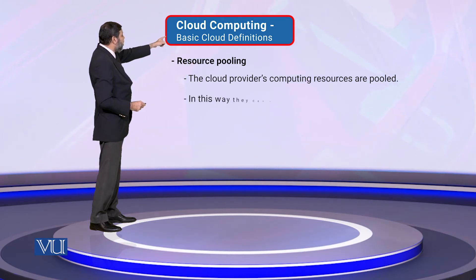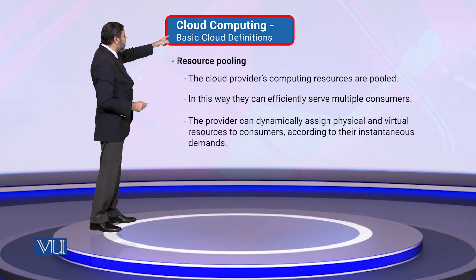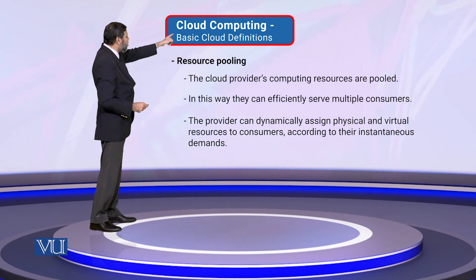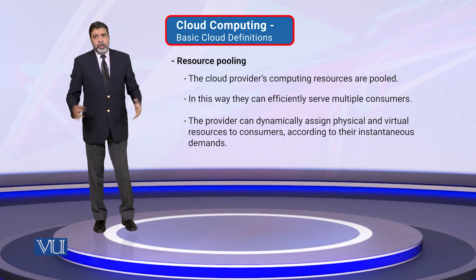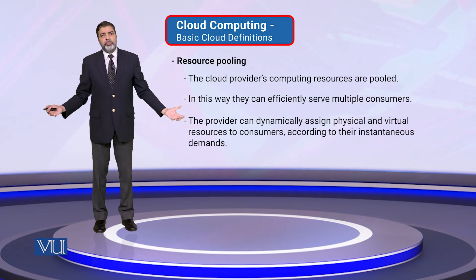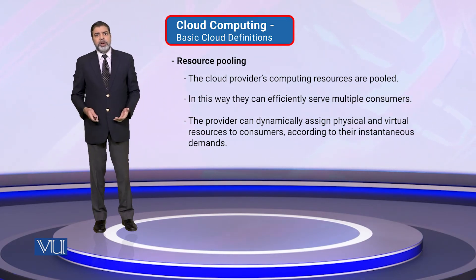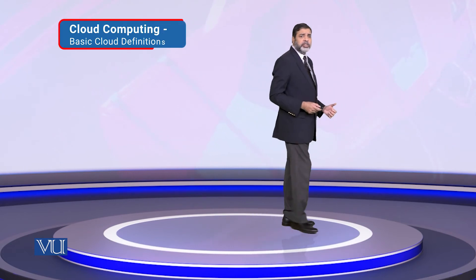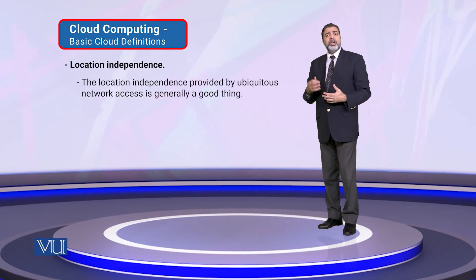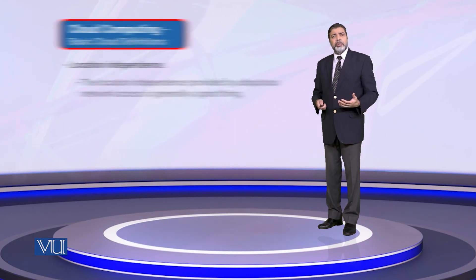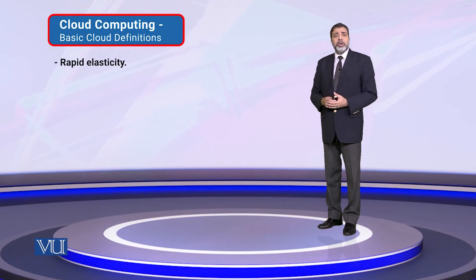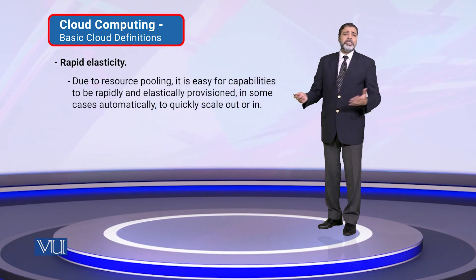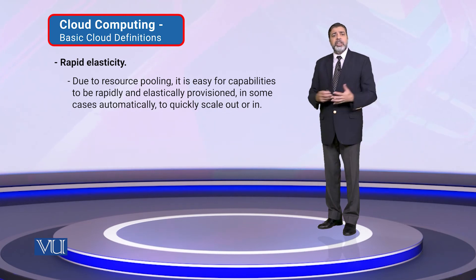Through resource pooling, the provider can efficiently serve multiple customers. The provider can dynamically assign physical and virtual resources to consumers according to their instantaneous demands. Resources are pooled and shared. This is a very important aspect providing location independence. The location independence provided by ubiquitous network access is generally a good thing because you can access resources from anywhere. And you can get rapid elasticity due to resource pooling.